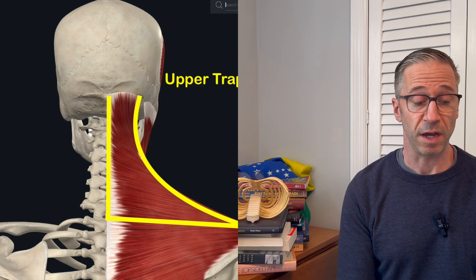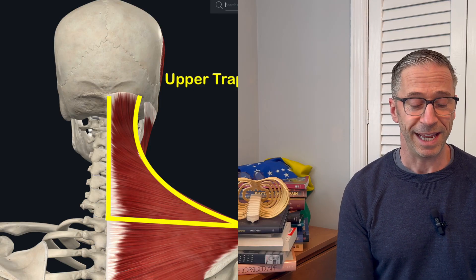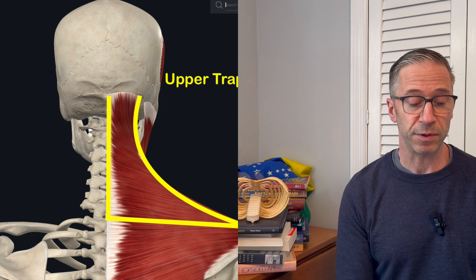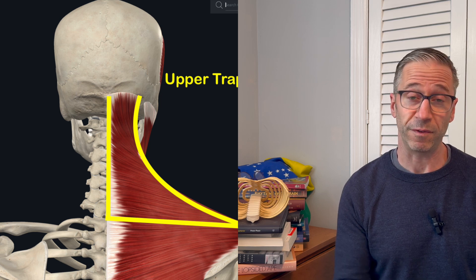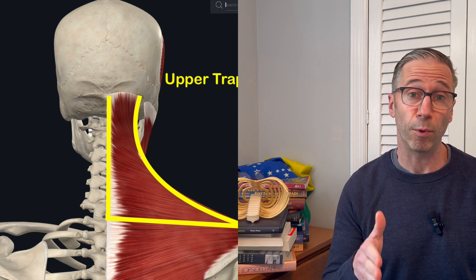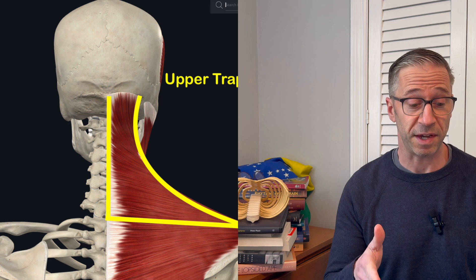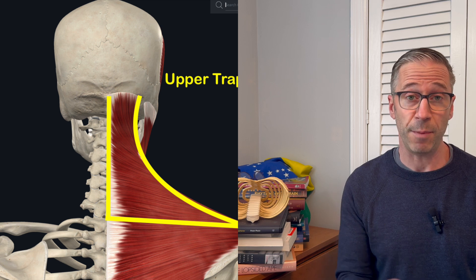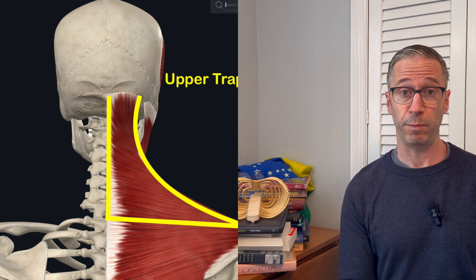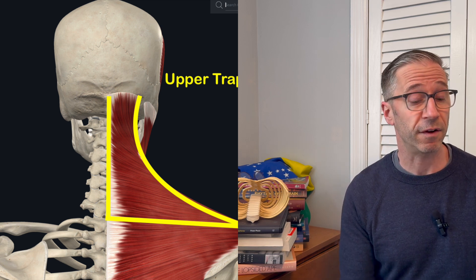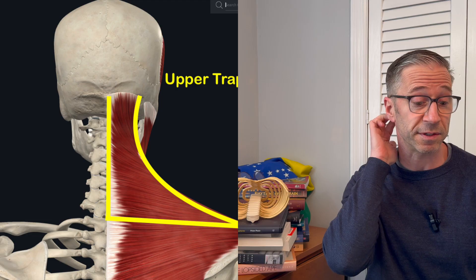From the back, you would see the upper trap is the primary player. It's not really going to be the middle and lower trap — in fact, we need more middle and lower trap activity, particularly on the right side. It's the upper trap that is starting to pull the head and neck forward because you can see it attaches on the base of the skull.